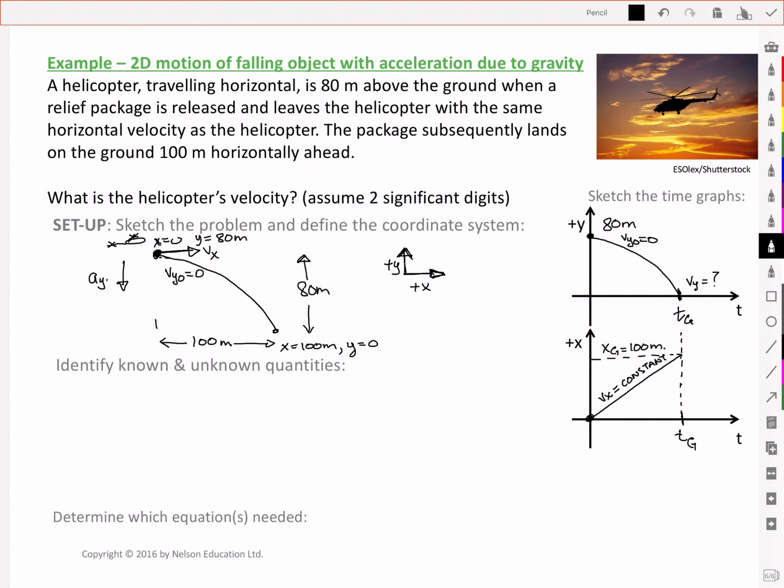Let's take inventory of the parameters for our package. At t naught equal to zero, we had an x naught of zero, and a y naught of 80 meters. We had a v_x that's equal to a constant, but it's unknown. And we had a v_y naught that was equal to zero. We have no acceleration in the x direction, and we do have an acceleration in the y direction. It's our usual negative g. At time t, sometime later, when it hits the ground, we now have an x equal to 100 meters, and a y equal to zero.